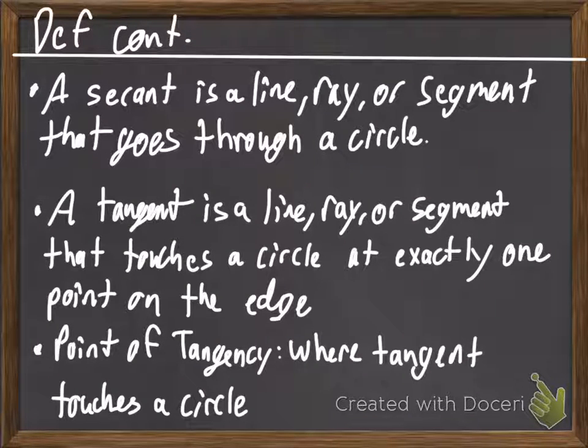Three more definitions. A secant is a line, ray, or segment that goes through a circle. So, a chord is inside the circle. A secant is something that goes through our circle.